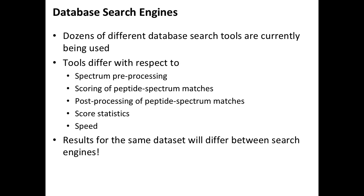We'll do a quick flyover of some search engines. There are literally dozens — probably a hundred or more different tools. The differences between them concern spectrum pre-processing, scoring, post-processing, filtering of matches, score statistics, speed, and licenses — some are commercial, others are free. Ultimately, these search engines give very similar results. There is no single search engine that is always superior, and you never really know which one works best on which dataset.